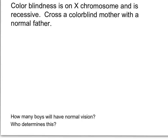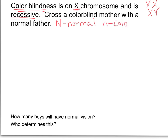Let's do one more problem — the last slide. We're going to look at colorblindness, which is also located on the X sex chromosome. Females are two X's and males are an X and a Y. Colorblindness is recessive. I'm going to make a key: capital N is normal, and lowercase n is colorblind. It's a recessive trait found only on the X chromosome — remember, the X chromosome is bigger, which is why it has more of those traits.